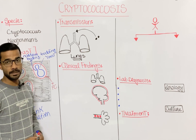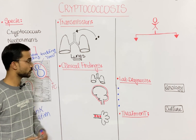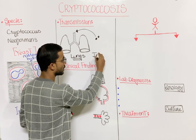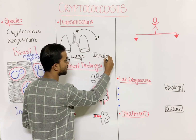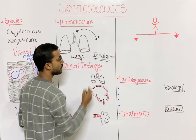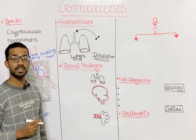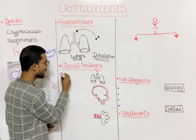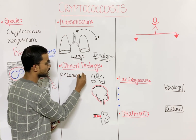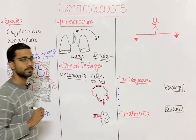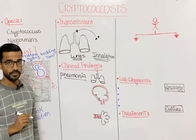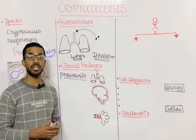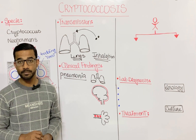Looking at the clinical findings, transmission is through inhalation, and the first organ affected by this fungus is the lungs. In the lungs you can see pneumonia — that is the most important finding.